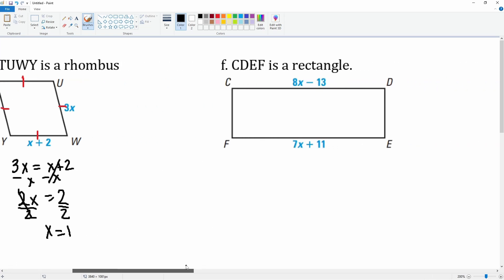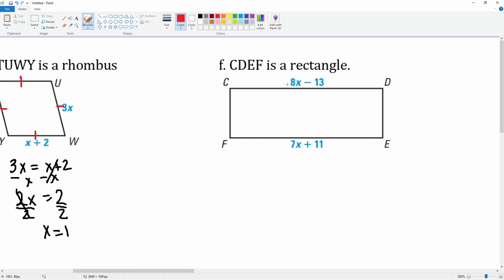Then the last one, rectangle. The length here is congruent to the length here, so we can say 8x minus 13 is equal to 7x plus 11. Minus 7x to both sides because we're trying to get x alone.